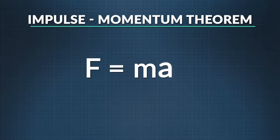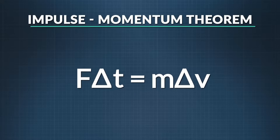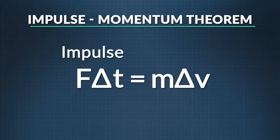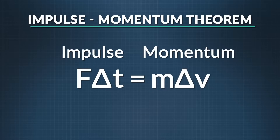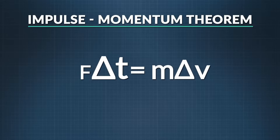The impulse-momentum theorem is just another way of looking at Newton's second law of motion. The acceleration in the second law becomes a change in velocity over time in the theorem. In order for an object's momentum to change, a force must be applied for a period of time — this is known as an object's impulse. The theorem says that the impulse applied to an object is equal to the change in momentum of that object.